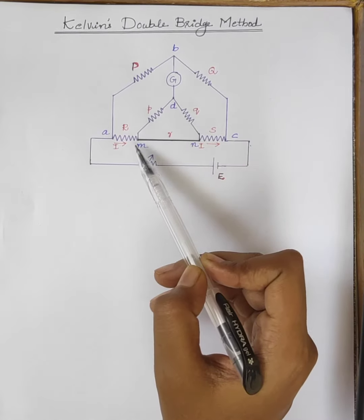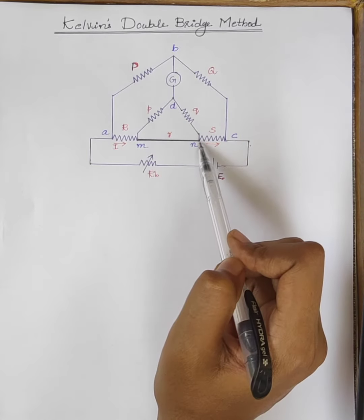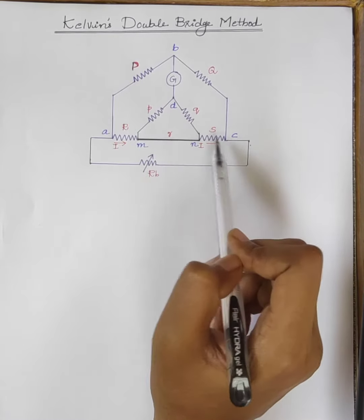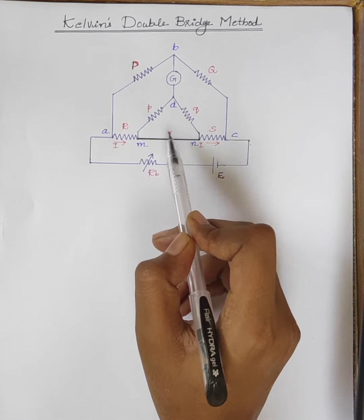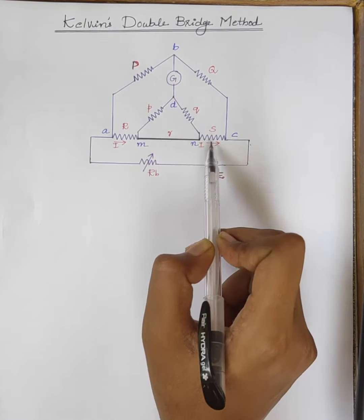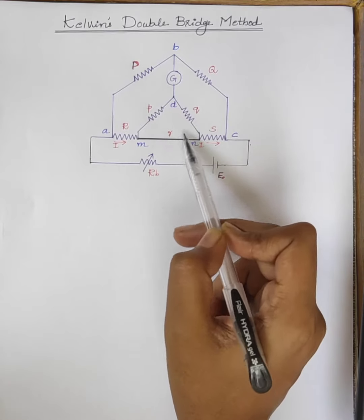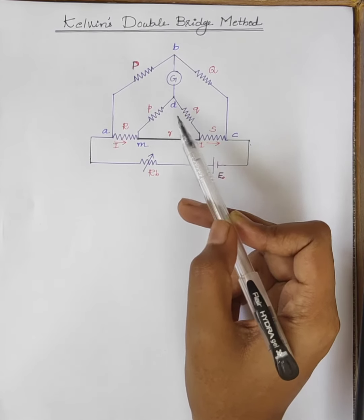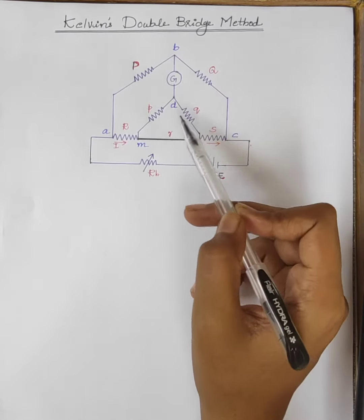We know that in the case of the Wheatstone bridge, four resistors are used: P, Q, R, and S. P and Q are the ratio arms, R is the unknown resistance, and S is the standard resistance. Here, small r is the resistance of the lead that connects the unknown resistance R and the standard resistance S. In order to avoid the effect of this connecting lead resistance r, Kelvin's double bridge uses a second set of ratio arms p and q — hence the name double bridge.